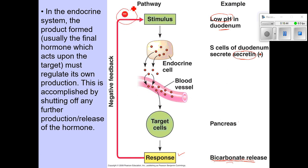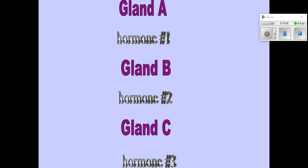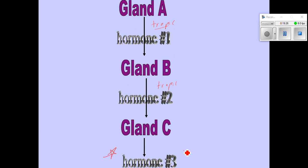Negative feedback inhibits any further response when that response is no longer required. We're going to see a pattern involving a sequence of three different glands — labeled glands A, B, and C — and three different hormones. Gland A produces a tropic hormone whose sole function is to tell gland B to produce another hormone, which is also a tropic hormone because it only tells gland C to produce a final hormone. It's this last hormone that actually carries out the response. Why not just have one gland? This allows for very fine control and regulation of hormone production and also allows for amplification.